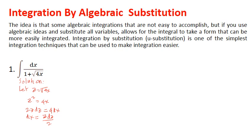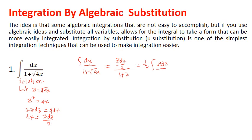Therefore, the integral of dx over 1 plus square root of 4x equals the integral of (g dg over 2) over (1 plus g), which equals one half integral of g dg over (1 plus g).